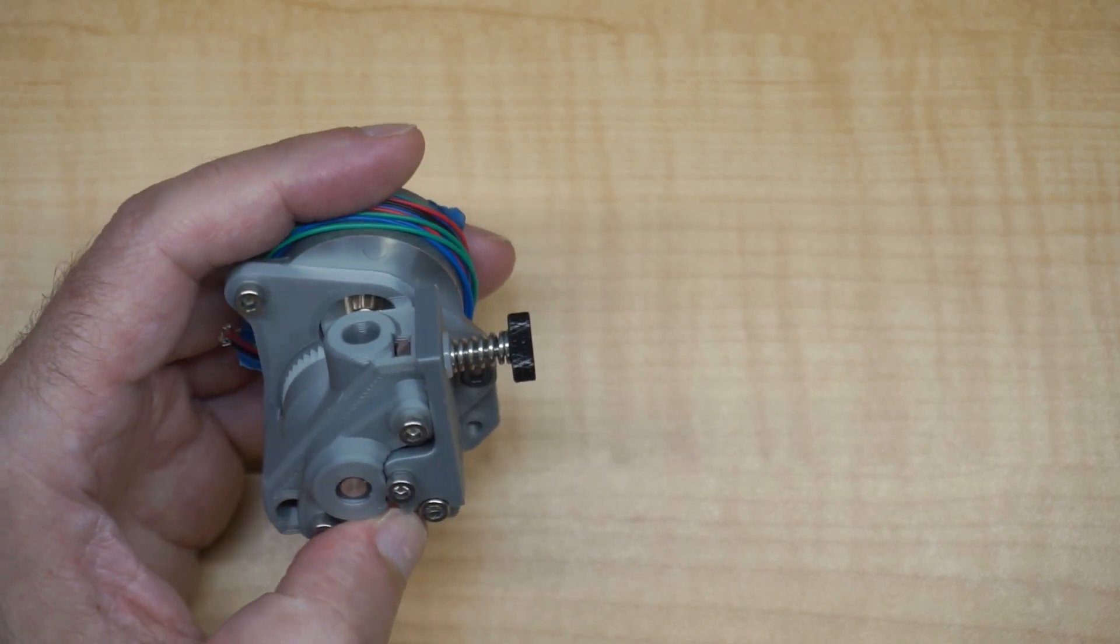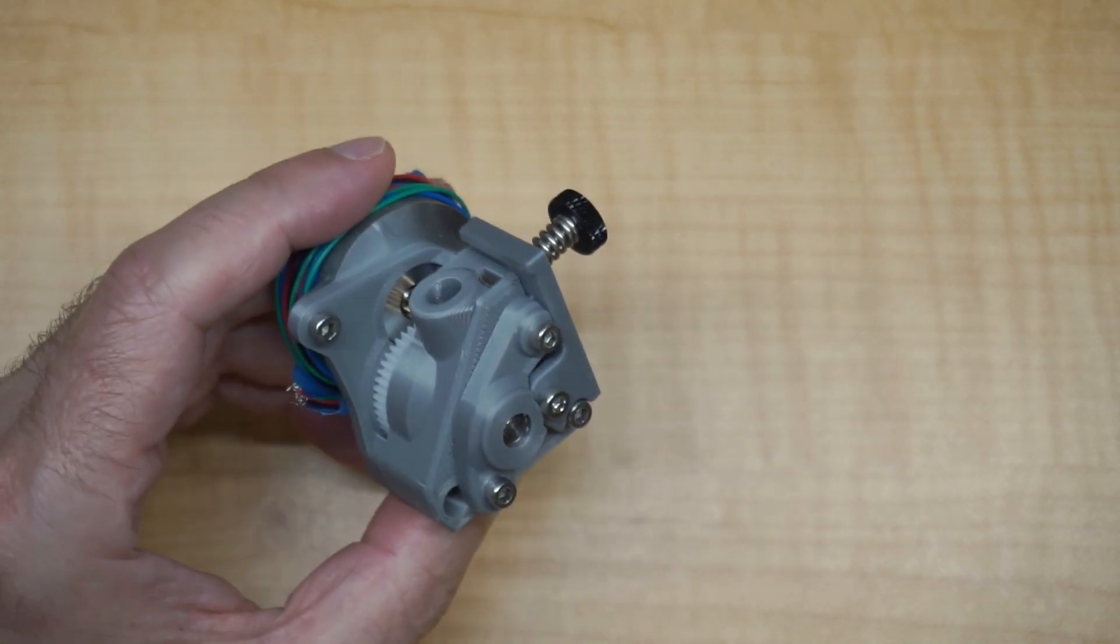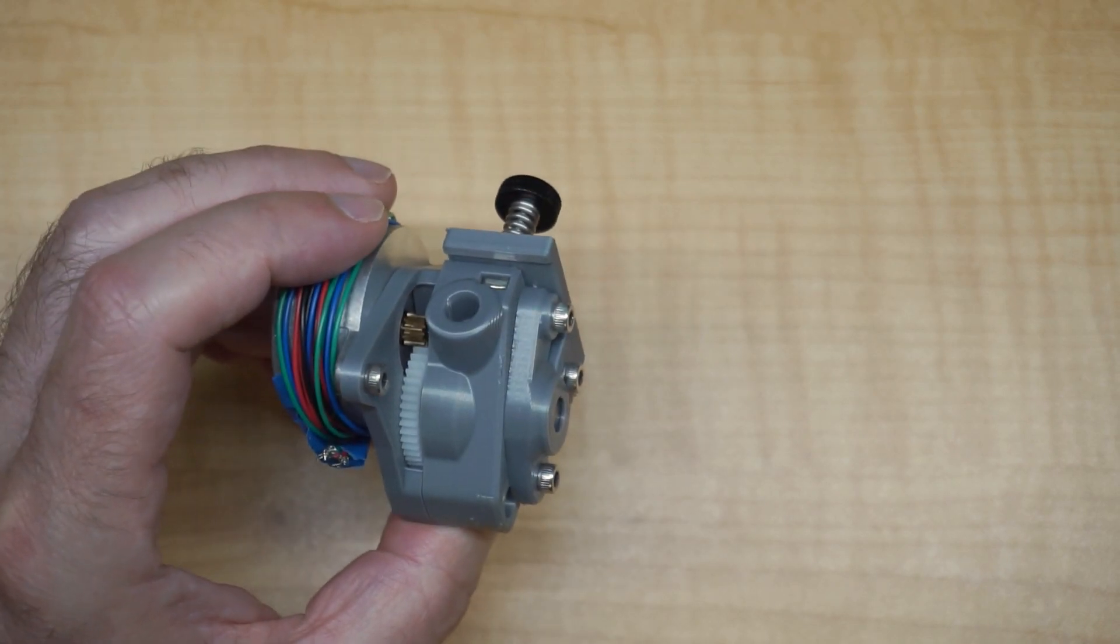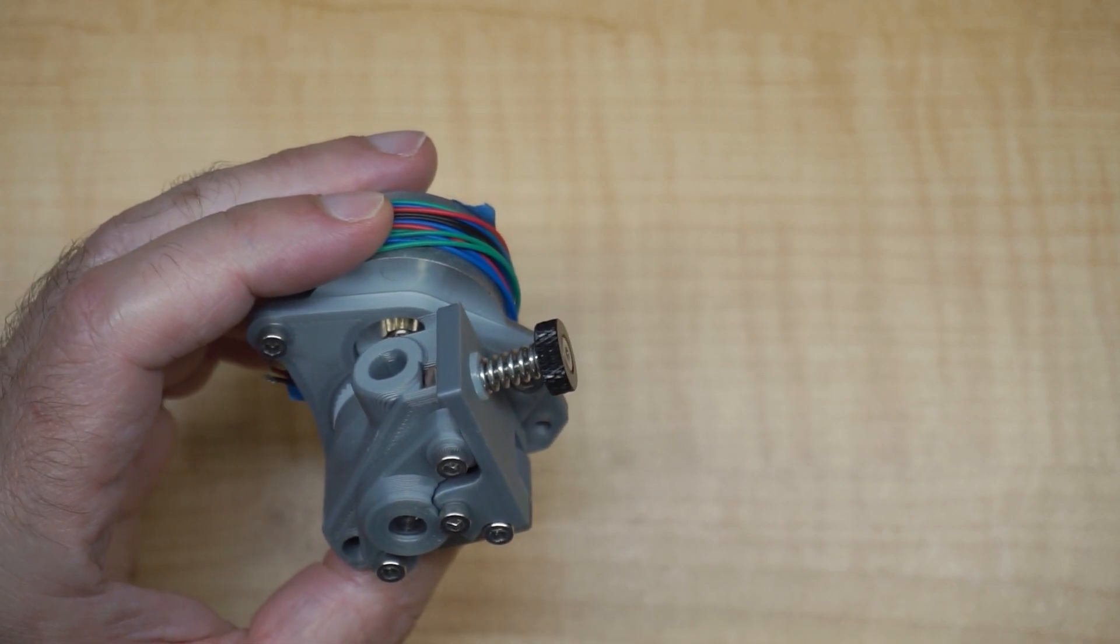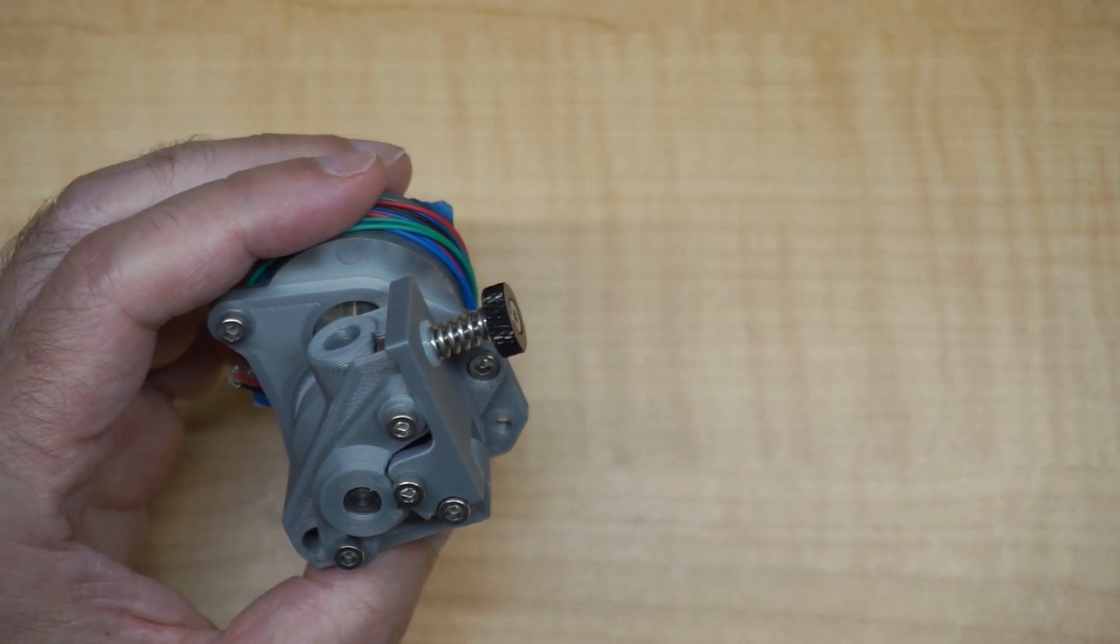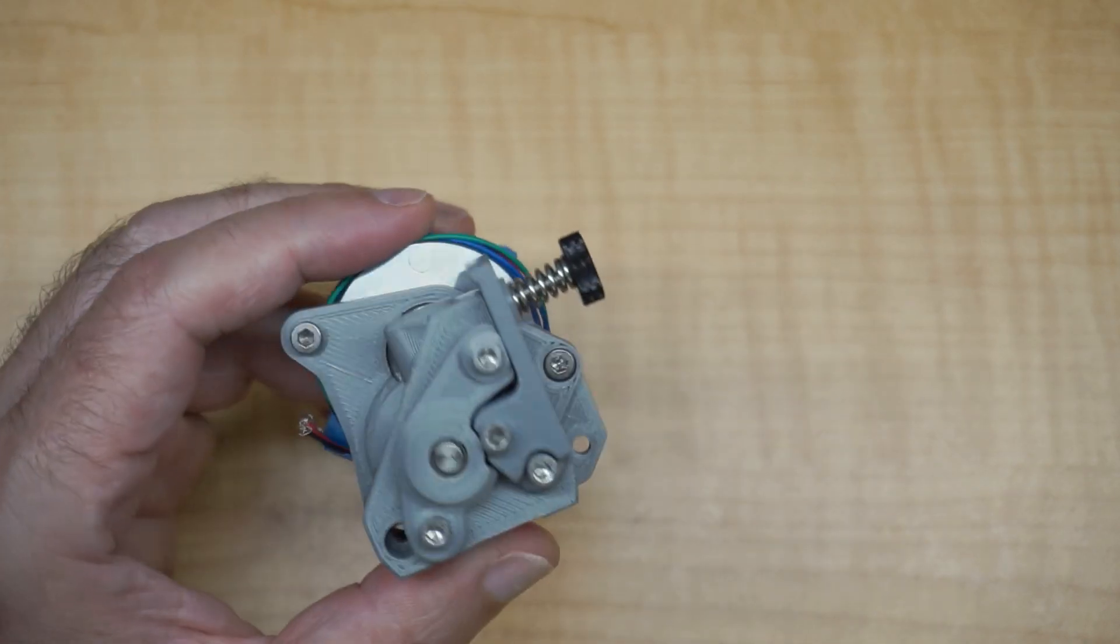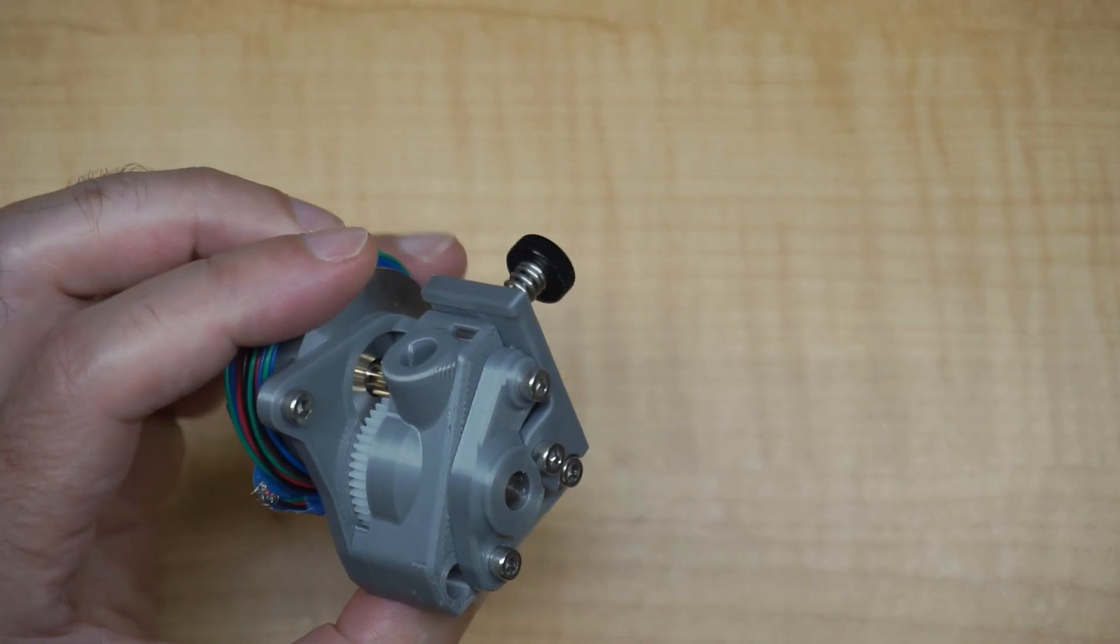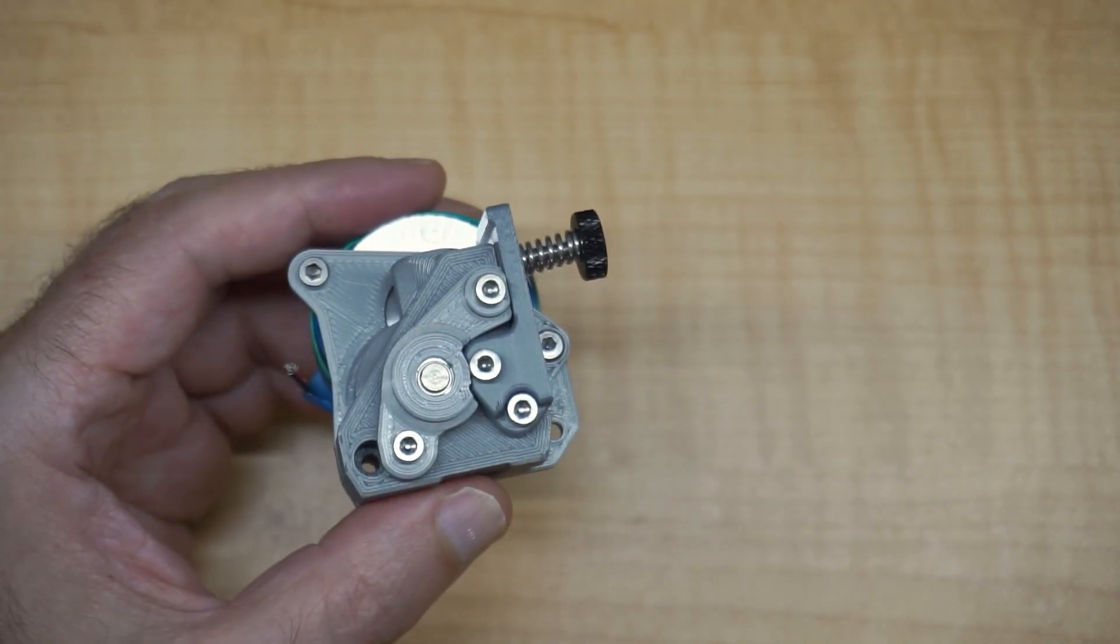So I downloaded the models and remixed it myself to make it a little easier to print and also to be compatible with the EVA carriage on my printer, the RatRig Vcore 3 that I just recently built. I'm going to show you how this goes together and what parts you would need to print to get this also working on your printer.